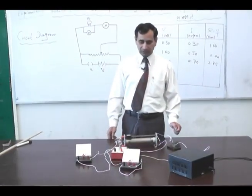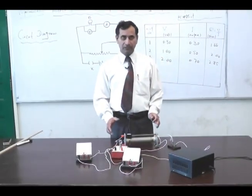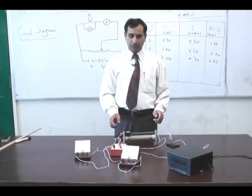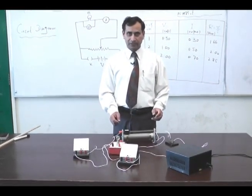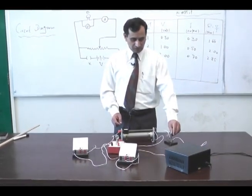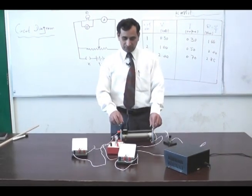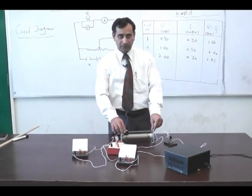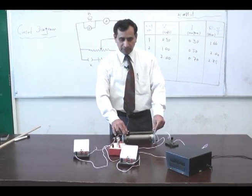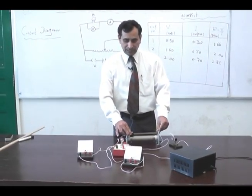Now with the help of this circuit, we will take the reading of tensile difference and electric current. We will turn on this plug key and then with the help of this rheostat, we will take the reading from the voltmeter and the ammeter.